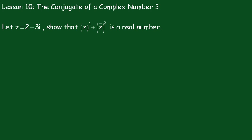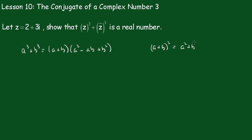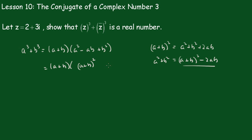We're going to use the same sort of technique we did before. We'll write this out and say that a cubed plus b cubed is equal to a plus b times a squared minus ab plus b squared. Now we know that a plus b all squared is equal to a squared plus b squared plus 2ab, so a squared plus b squared must be equal to a plus b all squared minus 2ab. Putting that in, we get a plus b times a plus b all squared minus 3ab.